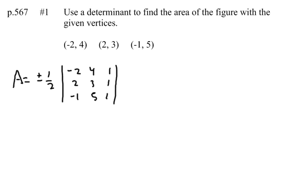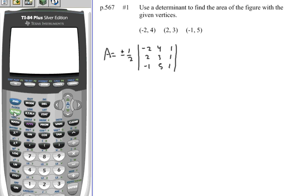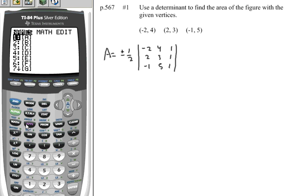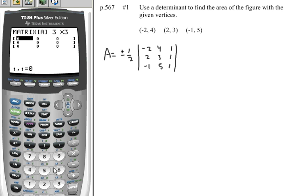Okay, so let's let our calculator find that determinant for us. I'm going to get in the matrix menu. Let's edit matrix A. It's a 3 by 3 matrix. And we'll put in these values: negative 2, 4, and 1.